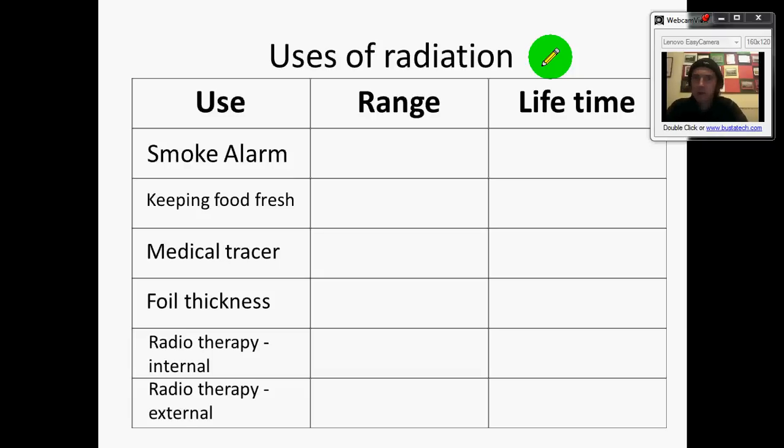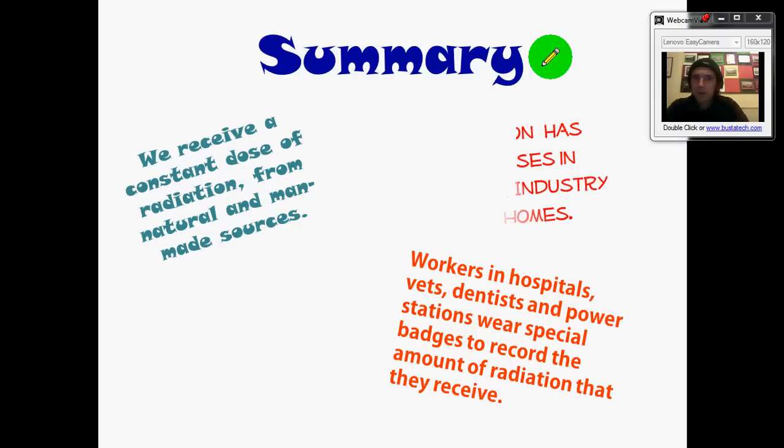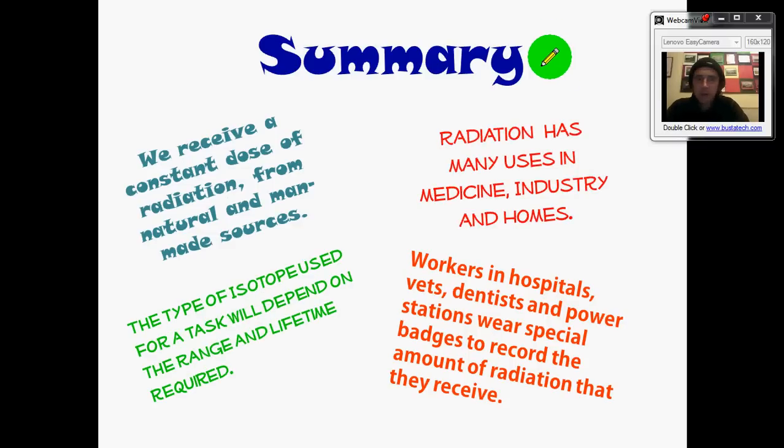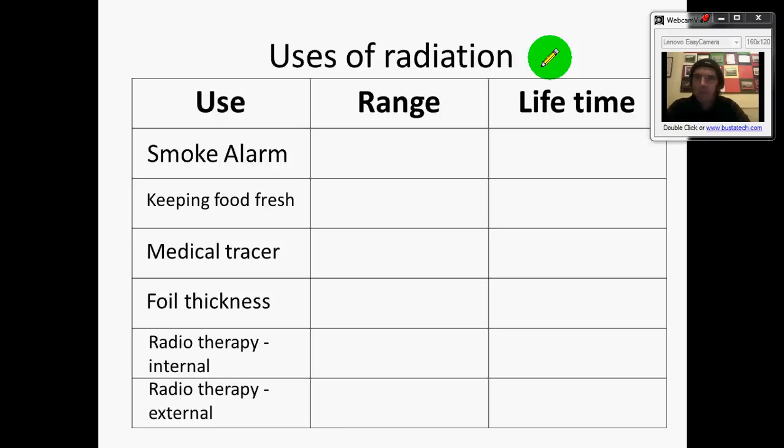That's a list of uses. So as a summary obviously radiation has got a lot of uses and the type of isotope, the type of radiation we use is going to depend on the range and the lifetime required. So just to skip back make sure you've got that table please in your books and you've had a go at filling it in ready for next lesson.